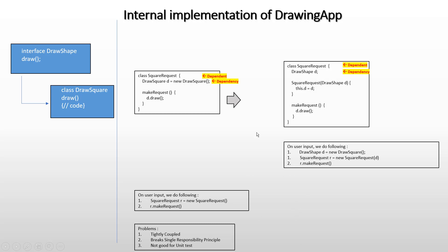Now let's look at the problems from the earlier code — in this new version, those problems don't exist at all. SquareRequest is now aware of DrawShape as an interface, meaning it's capable of calling any one of the methods inside DrawShape. When it calls any method, the call through polymorphism gets delegated to the particular concrete implementation of DrawShape that is supplied in the SquareRequest constructor.